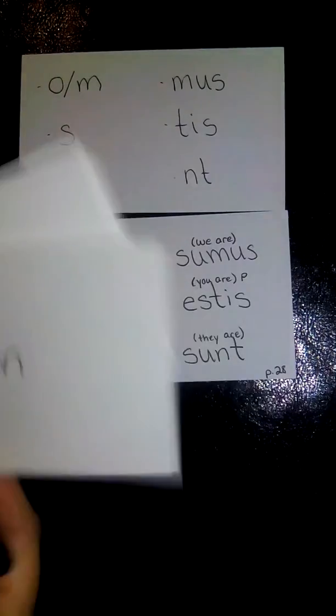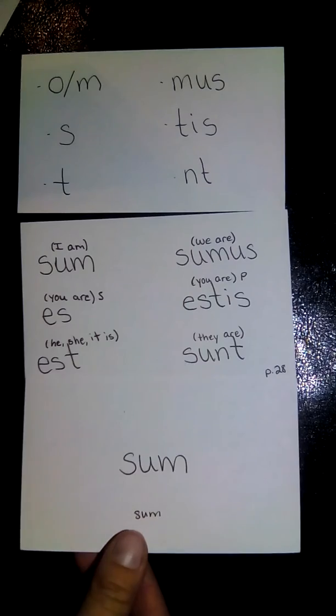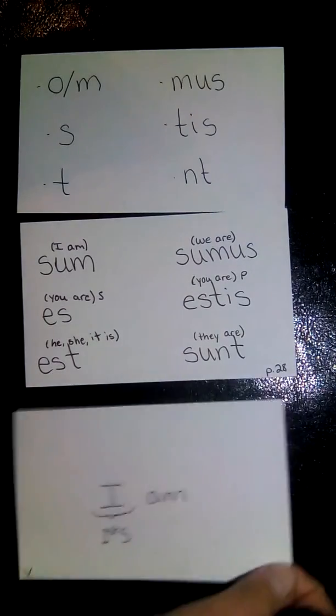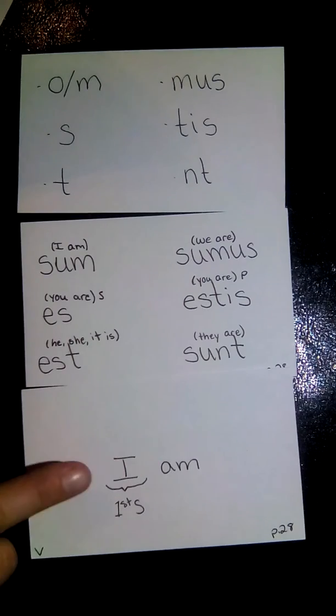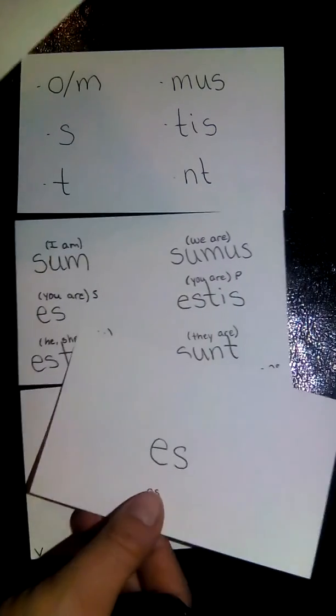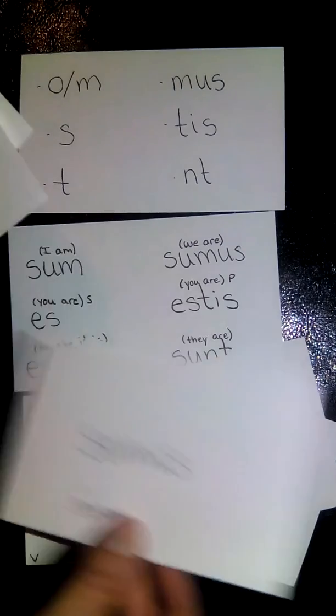I also suggest making flashcards for each of these so that you can practice them individually. So on the front I put sum and on the back I put I am identifying I as a first person singular. It is a verb and it is found on page 28. And I went ahead and made up a card for each of the other I am forms.